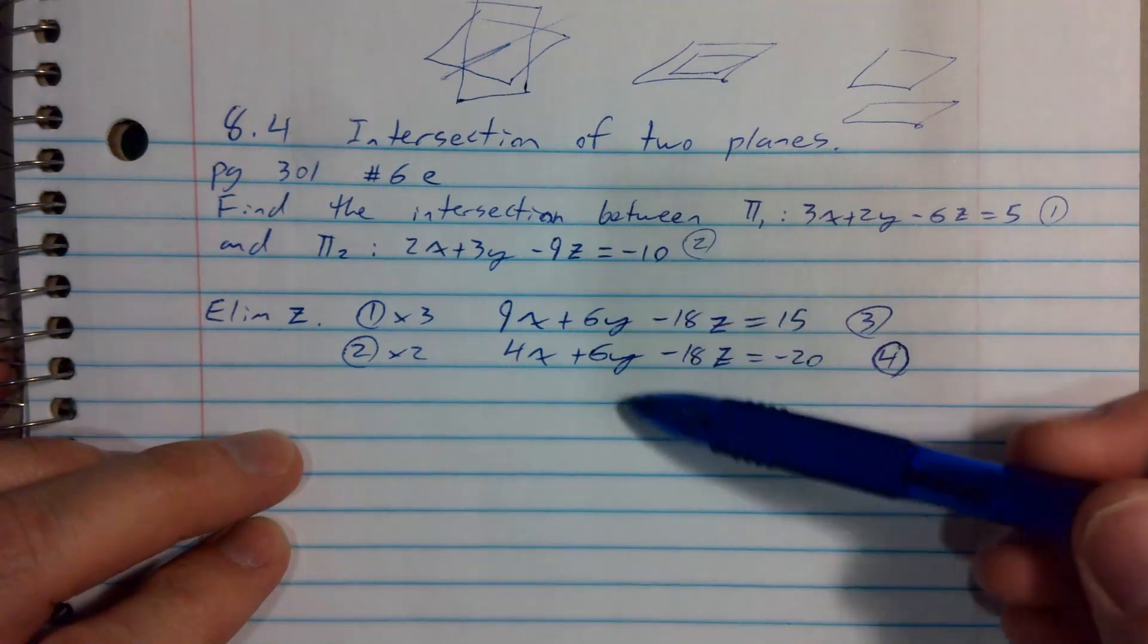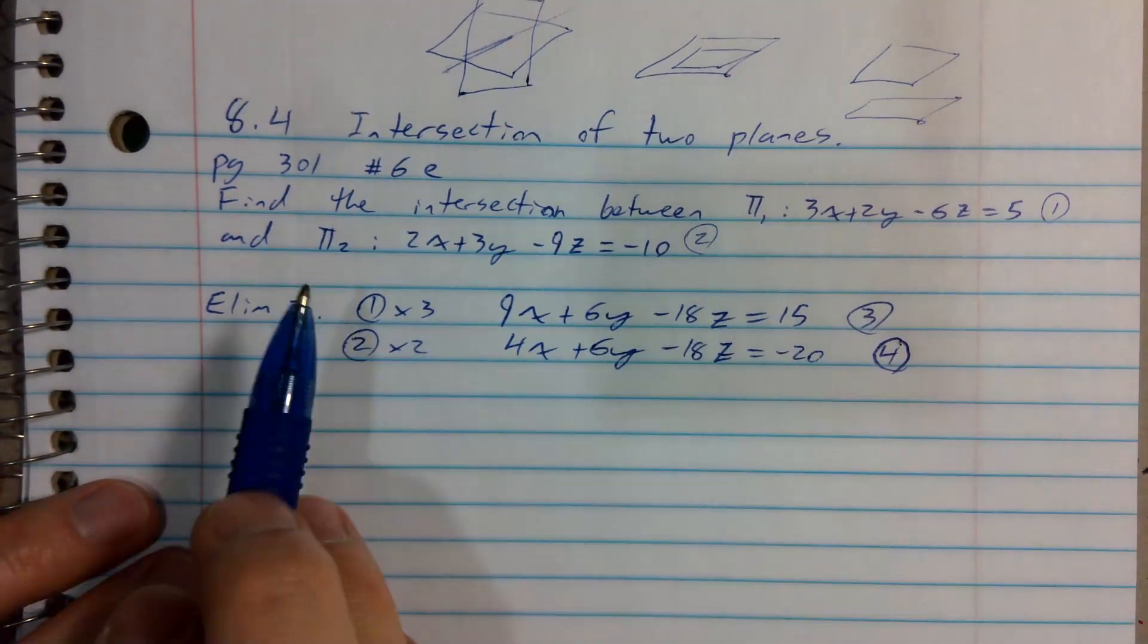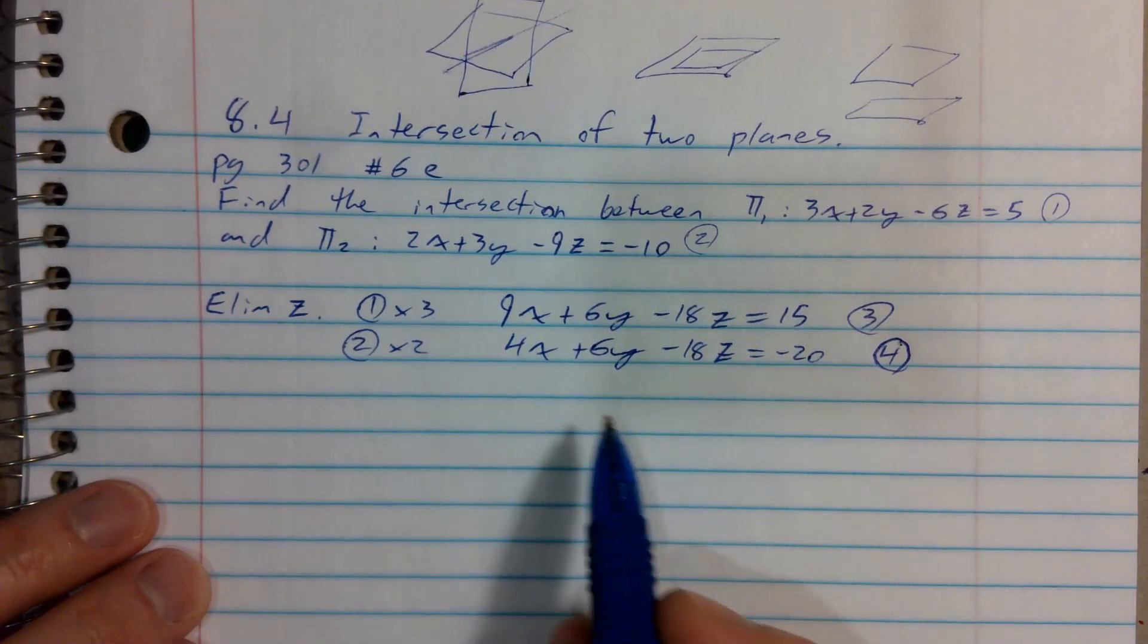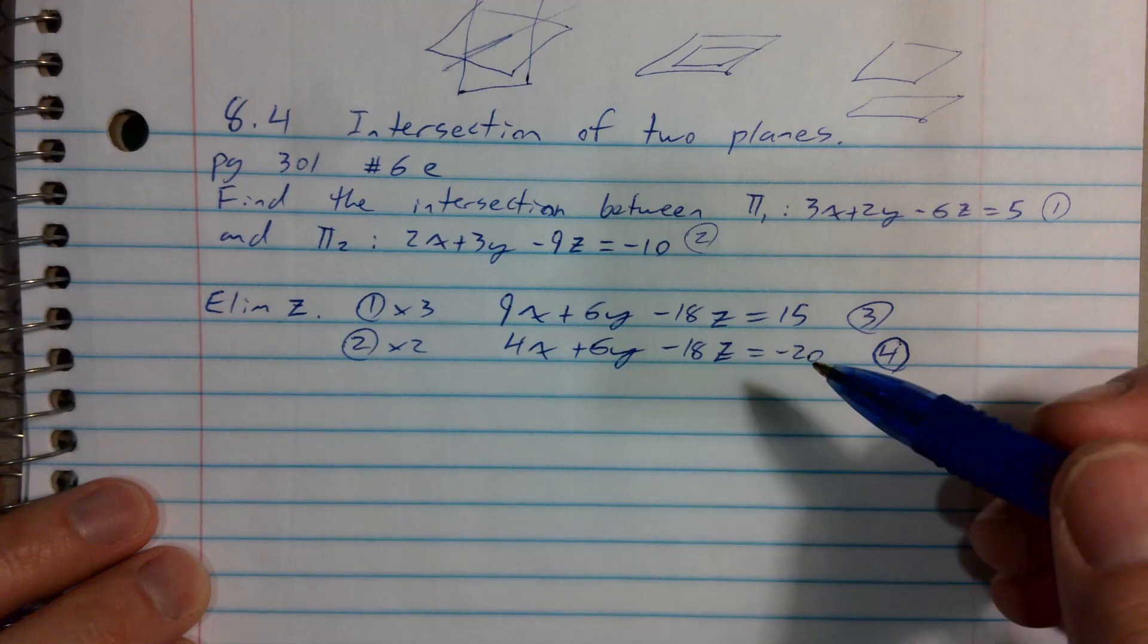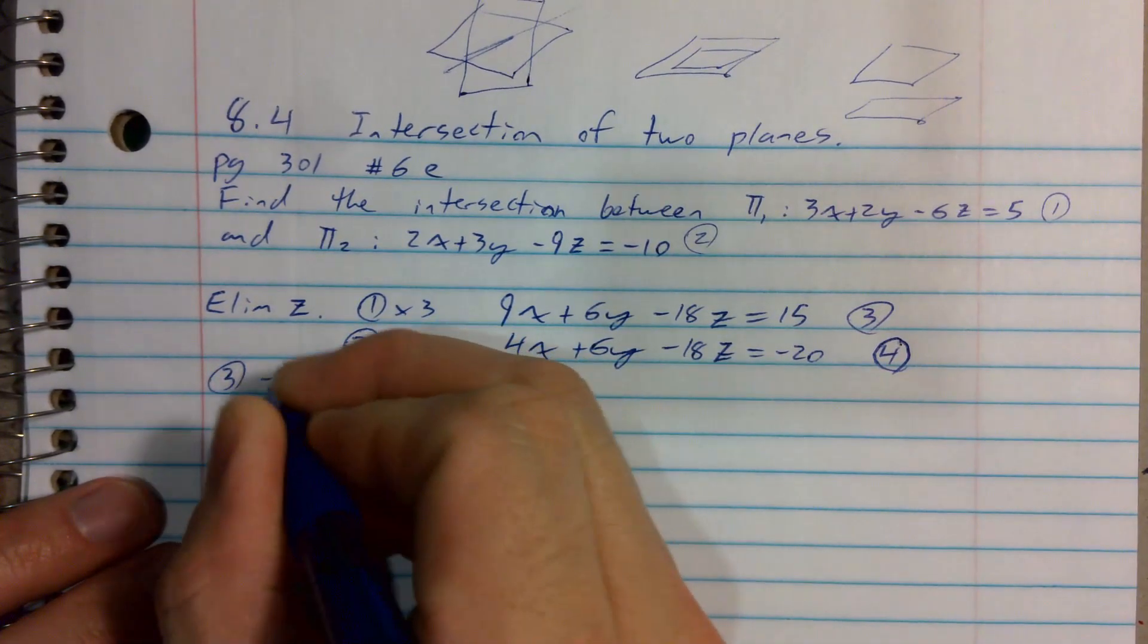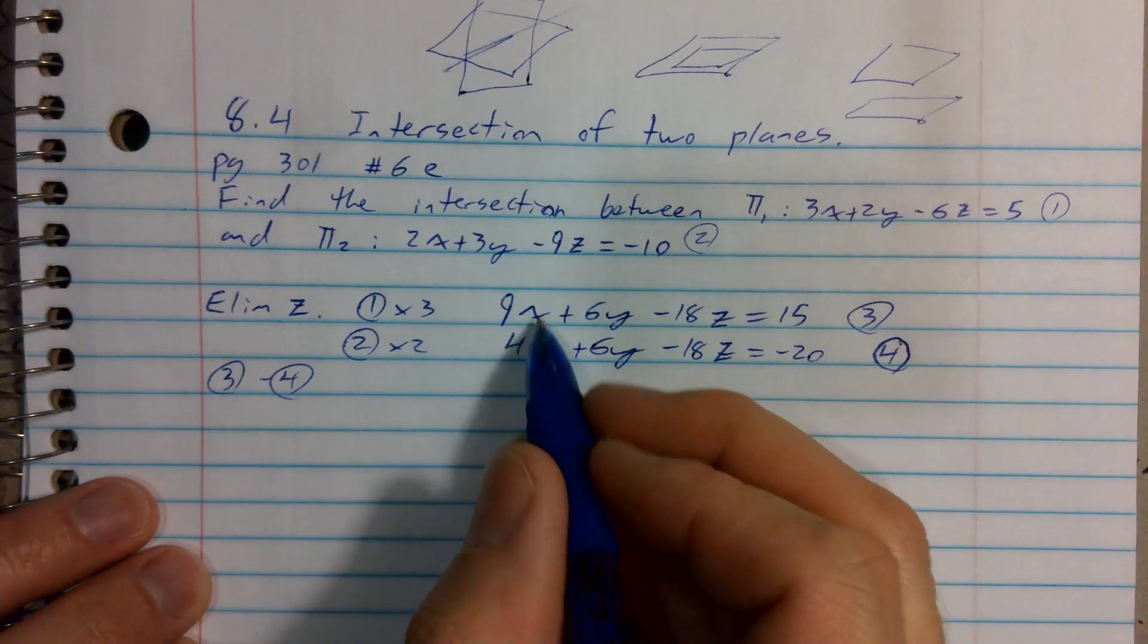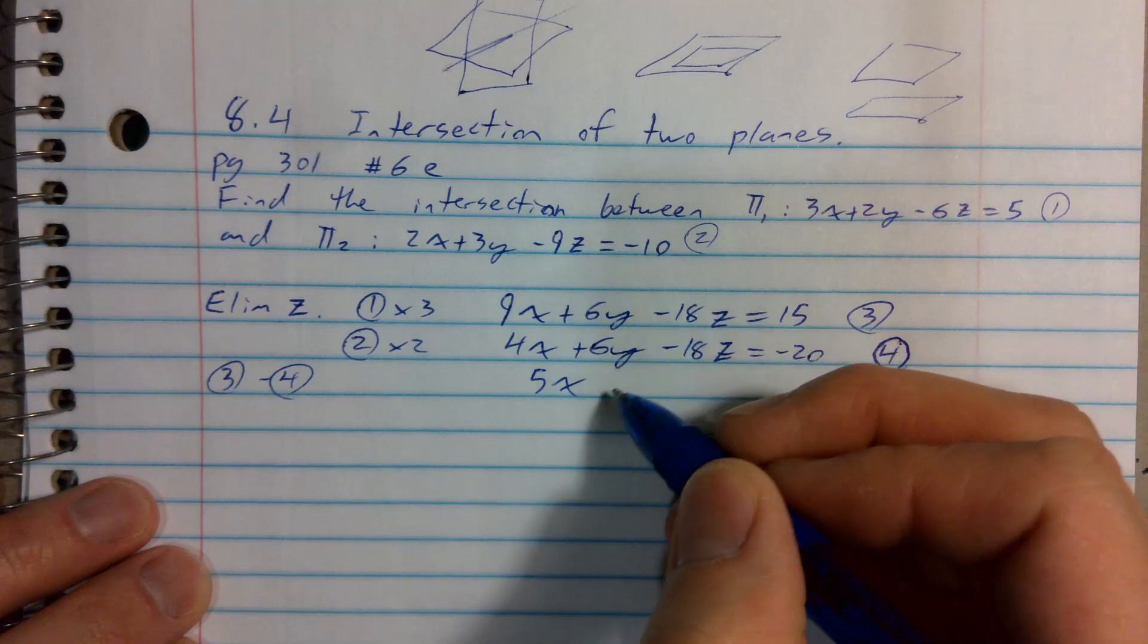Now, I wonder if you can see the concern or what's sort of different here from lesson examples. Remember, my goal was to eliminate zed, not to eliminate y. But when I eliminate zed by doing equation 3 minus equation 4, that'll give me 9x minus 4x. That'll be 5x.